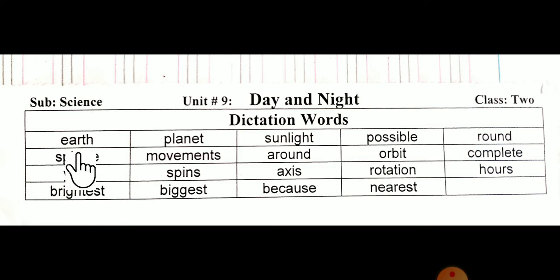The first line is Earth, E-A-R-T-H, Earth. Second word is Planet, P-L-A-N-E-T, Planet. Sunlight, S-U-N-L-I-G-H-T, Sunlight.